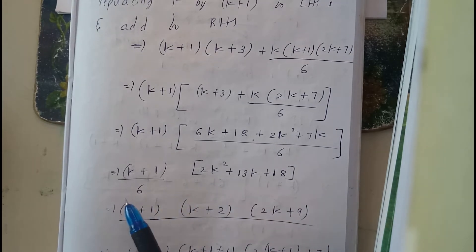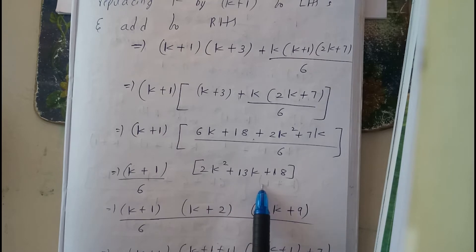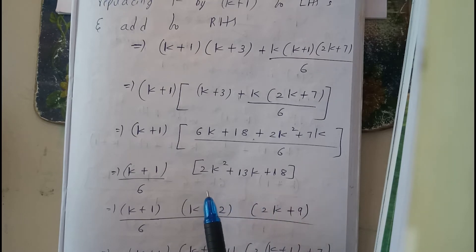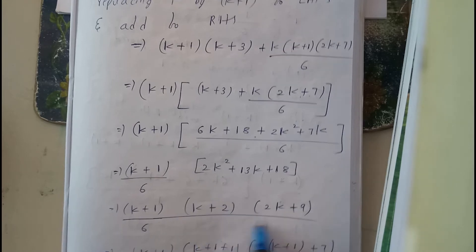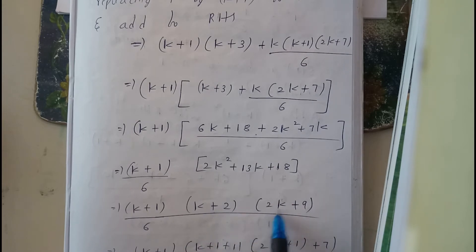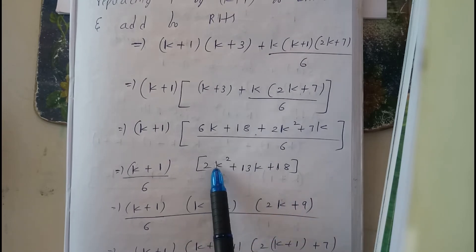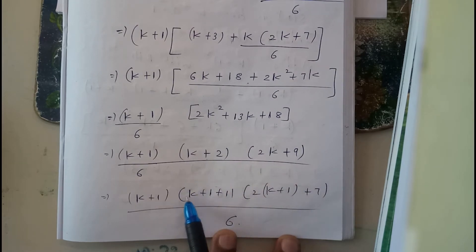Using factorization: 2×18 = 36, and 13 can be split to give factors. Solving this — you can use a calculator — the roots are −2 and −9/2. So the factored form gives (k+2)(2k+9).